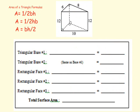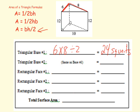Let's do one more example. I'm going to do the triangular bases first. Since the top is labeled, I'll use those measurements: base is 6 and height is 8. Using base times height divided by 2, that's 6 times 8 divided by 2, which equals 24. There's no unit label, so it's 24 square units. The bottom base is congruent to the top, so it's also 24 square units.